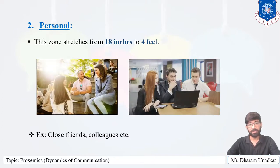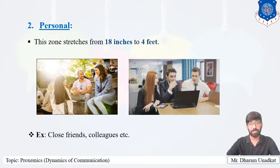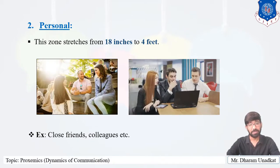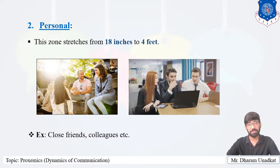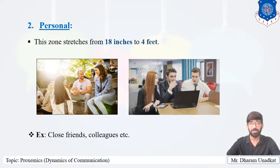The second zone is personal, stretching from 18 inches to 4 feet. Examples include close friends, colleagues, and peers. Unlike the intimate zone where whispering is enough, in the personal zone a normal conversation can take place. Though this zone is personal, it is quite relaxed and casual. It permits spontaneous and unplanned communication. Sitting or standing close in this zone gives the impression of friendliness and warmth.